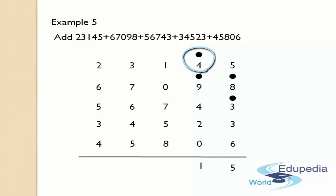Add this count to the first digit of the hundreds column: 2 plus 8 gives 10, so you got a two-digit number. Leave 1, put a dot on top of the number 8. The remaining number 0 should be added to the next number 5, so 0 plus 5 is 5. And 5 plus 7 gives 12, again a two-digit number.